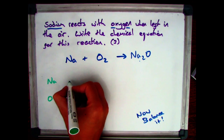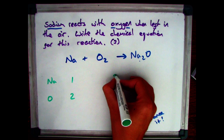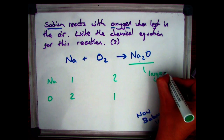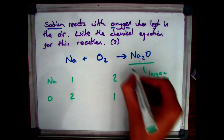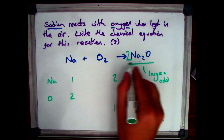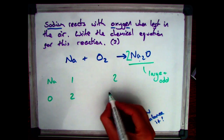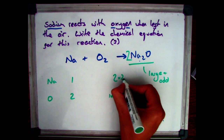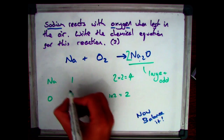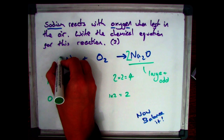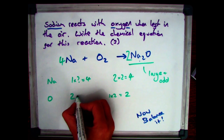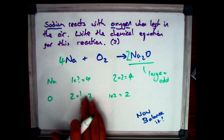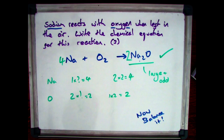Looking at sodium and oxygen: I've got one sodium and two oxygens on the left, and two sodiums and one oxygen on the right. Na2O is a large compound with the odd number in, so I double it — that gives two times one is two oxygens, and two times two is four sodiums. I now need to go to the left-hand side: four sodiums on the right means I multiply my one by four; I've got two oxygens which just stays. So that is my balanced equation.